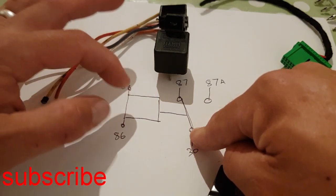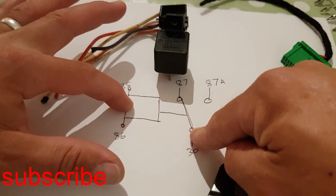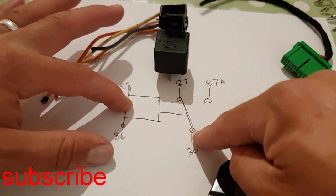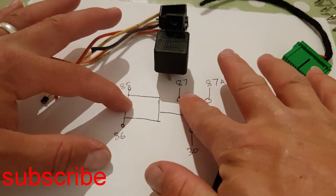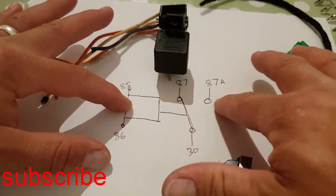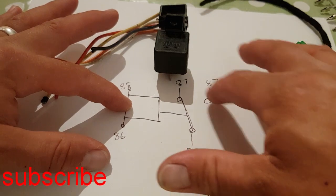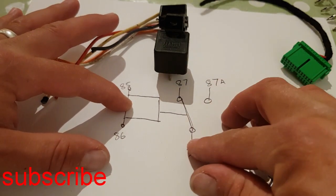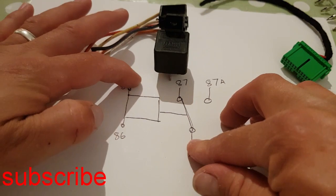All that's going to do is energize this electromagnet. When the electromagnet is energized it will then move this pole from 87 to 87A or back again. So your power is going to come in here, this will switch on and energize this, and then this will either move power from here to here.